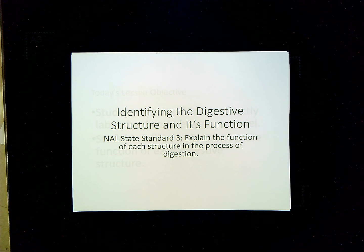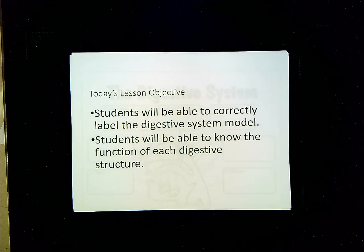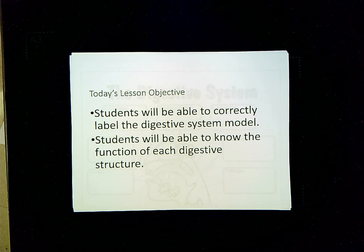This lesson is on identifying the digestive structure and its function. The purpose of this lesson is to cover Nutritional Across the Lifespan State Standard 3, which states to explain the function of each structure in the process of digestion. At the end of the lesson, students should be able to correctly label the digestive system model and know the function of each digestive structure.